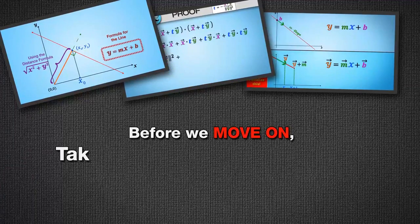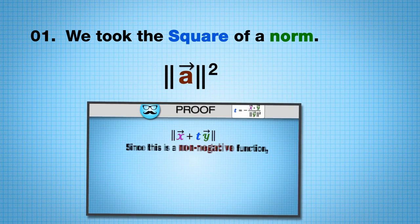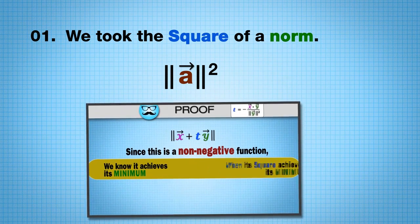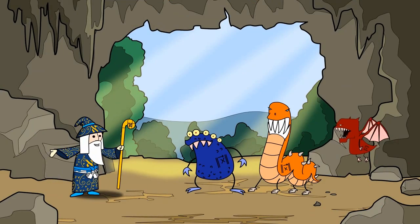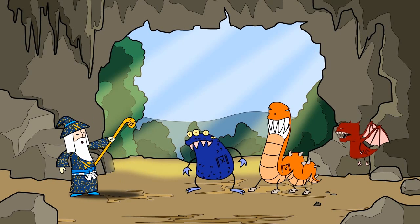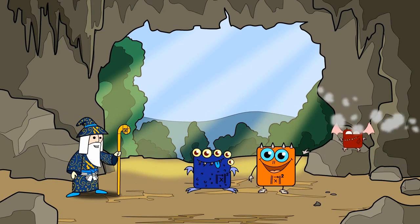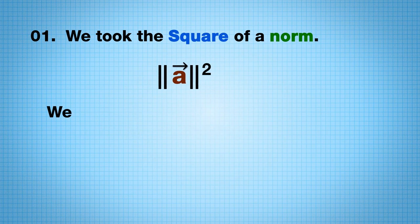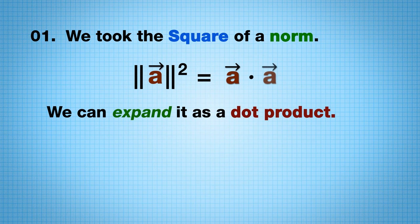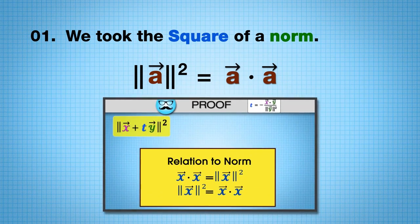Before we move on, take note of two steps in this proof. First, we took the square of a norm. This trick is so important that it is worth immortalizing as a mantra. Math Mantra: When dealing with norms, it is often easier to work with their squares. One advantage is that when we square a norm, we can expand it as a dot product. This allows us to exploit dot product properties.